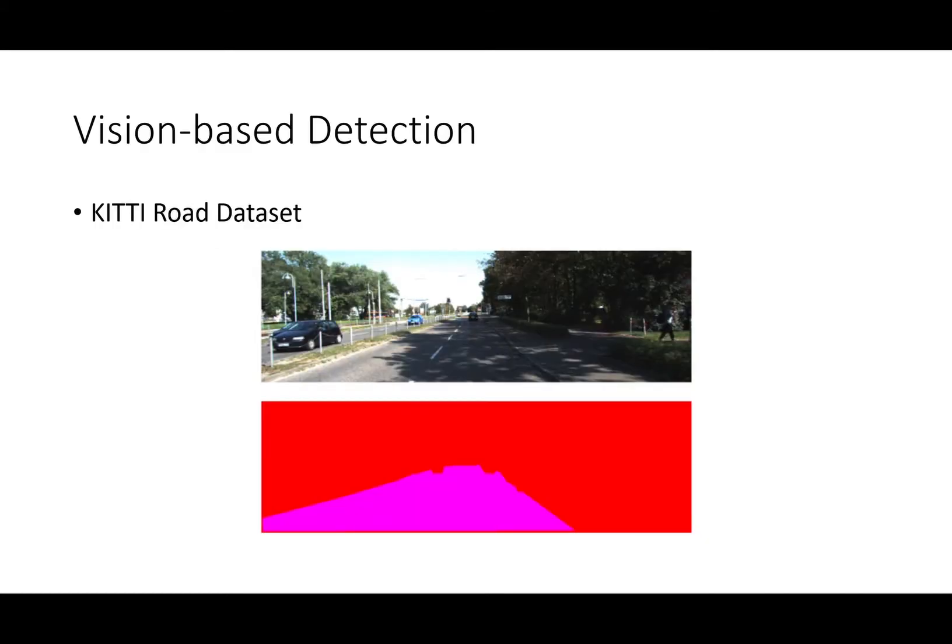First, I will talk about vision-based detection. The dataset we are using is KITTI Road dataset. It consists of around 300 road scenes and their corresponding ground truth labels. In ground truth labels, the road regions are marked as purple while everything else is marked as red.